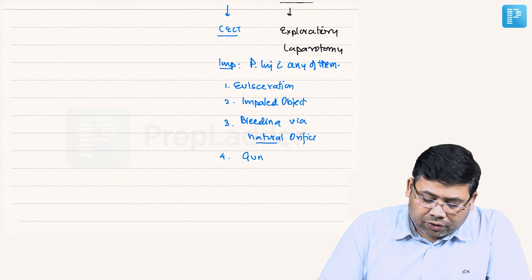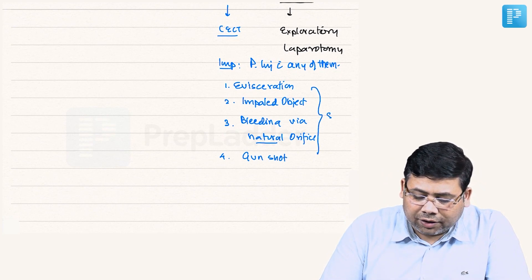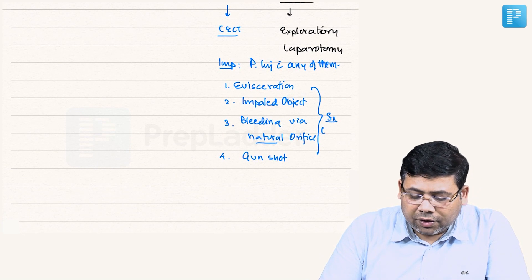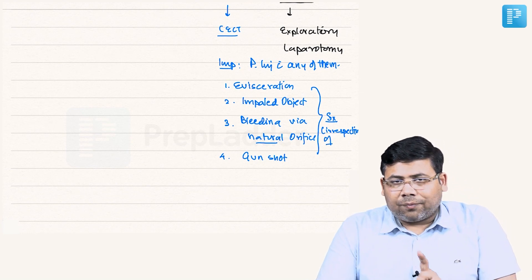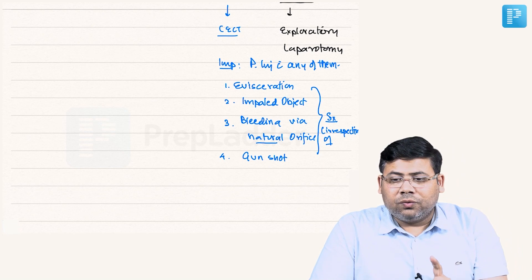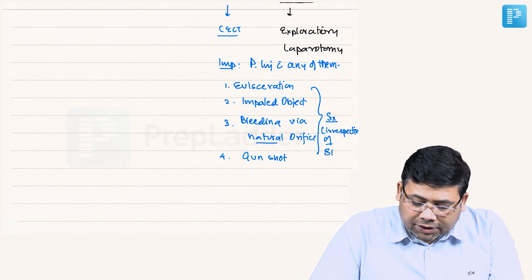Fourth is a patient with gunshot. In all these cases, you don't have to waste time for anything. You have to go for surgery irrespective of the status, because time is more important than the scar. A negative laparotomy is justifiable if you have done it with an intention to save the life of the patient. So irrespective of the status, you are going to go for surgery.